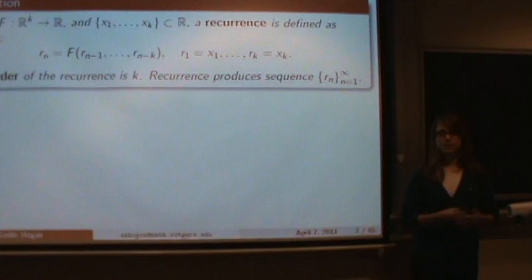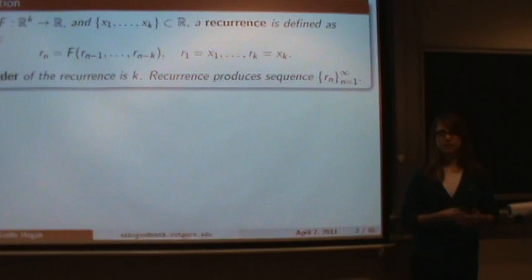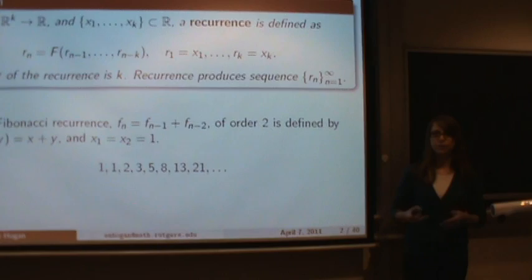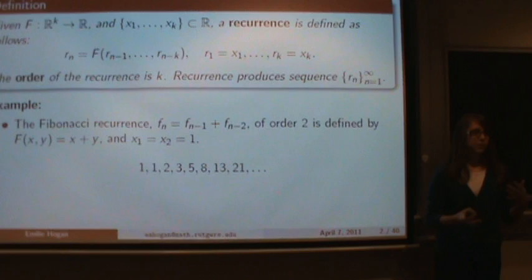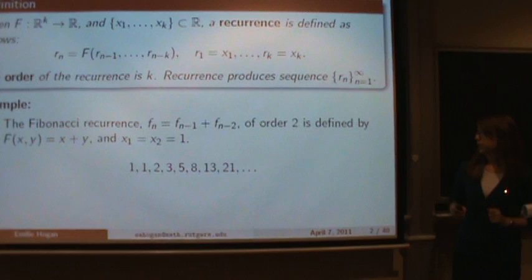Given a recurrence and a set of initial conditions, we produce an infinite sequence. For example, the first recurrence that people usually see is the Fibonacci recurrence: F sub n equals F sub n minus 1 plus F sub n minus 2. This is a recurrence of order 2. The function that defines it is just x plus y, and the initial conditions are both 1s. We get this sequence by iterating the recurrence.